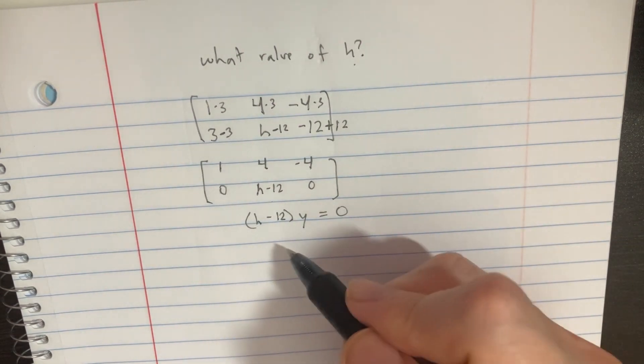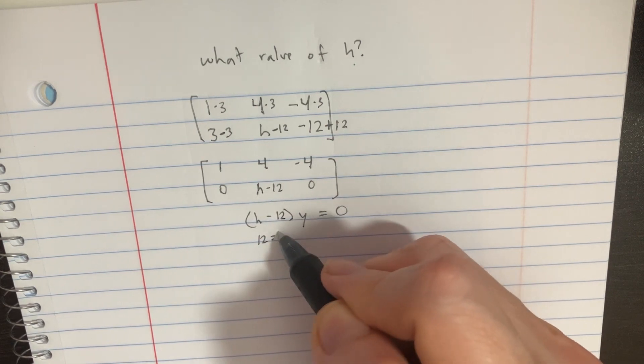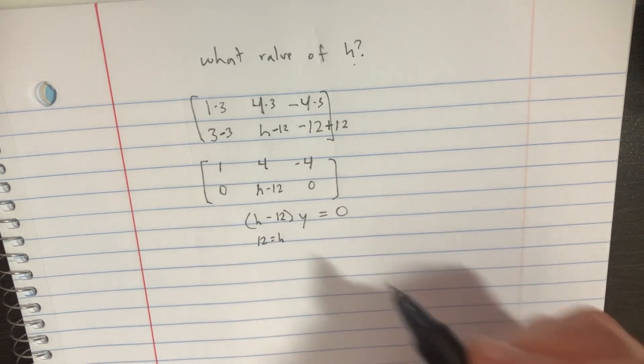And so you might be tempted to put just a 12 over there and just say, okay, yeah, 12 equals h, and then that would make that work properly.